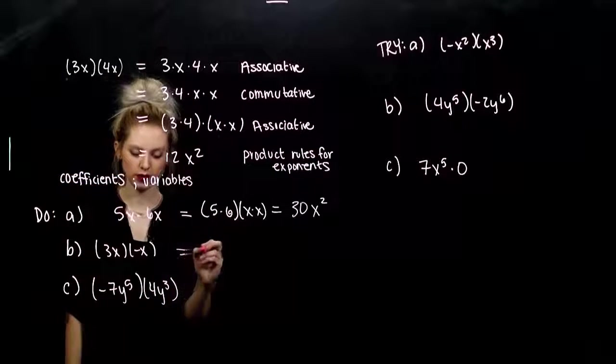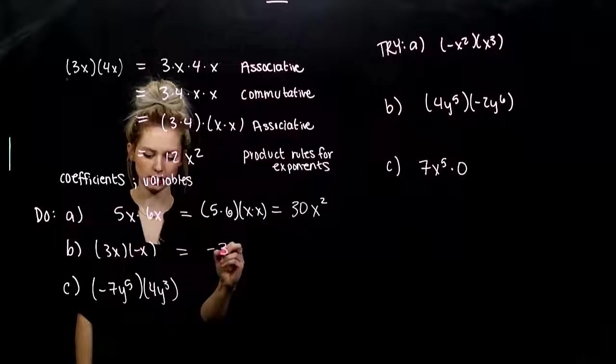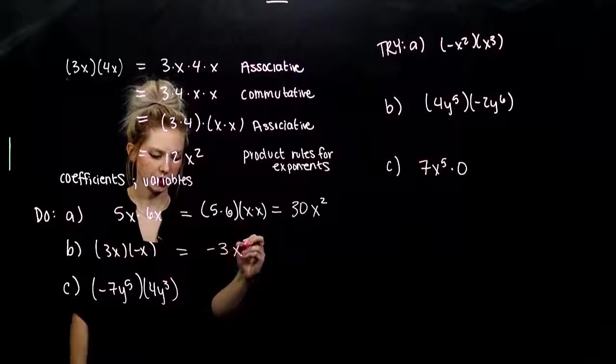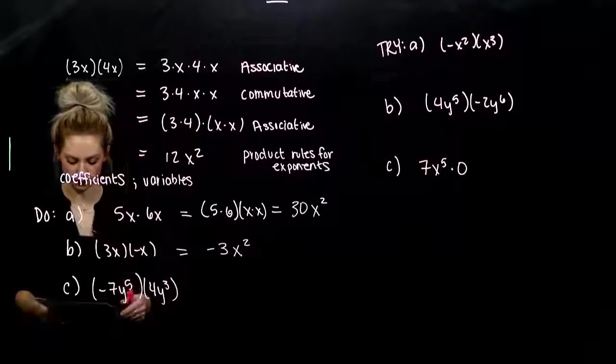For part b, multiplying the coefficients, I've got negative three. And, I've got x times x. Two factors of those. Negative three x squared.